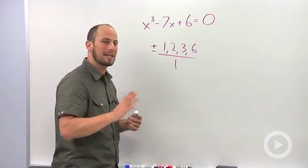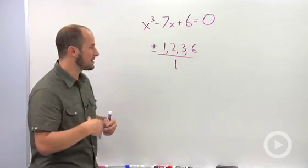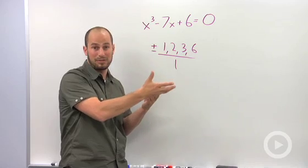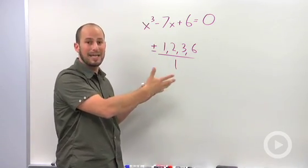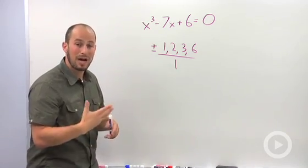So what can happen is a couple of things. First, what your teacher may do is say factor this knowing that only a couple of these may be real potential zeros. So they're going to eliminate some of these options for you. So instead of having to check all 8, you're down to checking 2 or 3. The other thing you could do is graph them.